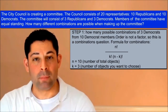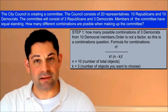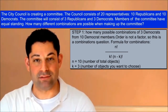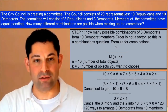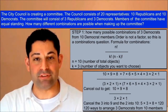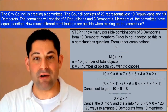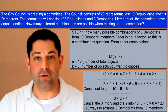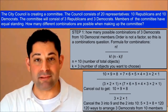In other words, there are 10 possible Democrats for the first slot, 9 for the next, and 8 for the last. So there are 10 times 9 times 8 ways to choose 3 Democrats. We can express this as n factorial over n minus k factorial. Now we must divide this by k factorial in order to find the number of k-sized groups we can arrange from the 10 times 9 times 8 possible arrangements.